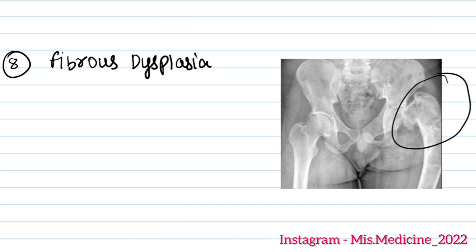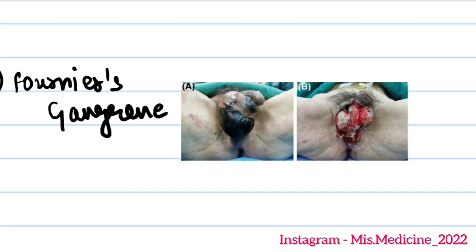The next image was fibrous dysplasia. Then Fournier's gangrene — two or three questions were related to this.